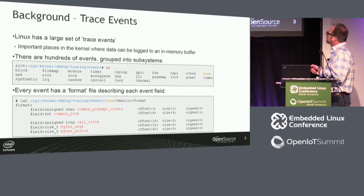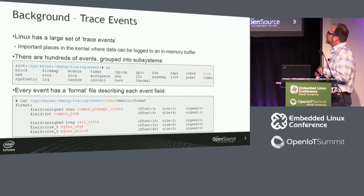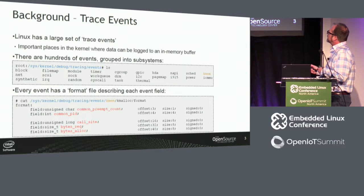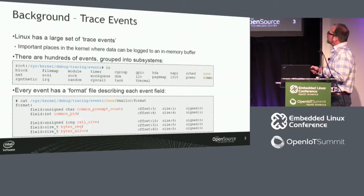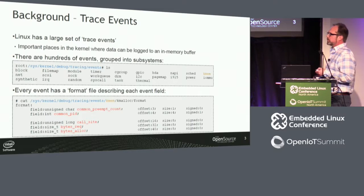Within each trace event subdirectory there are a set of files used to describe and control individual trace events. The most important file for this talk is the format file, which describes the event data that gets logged whenever you enable an event. This is an example — the kmalloc event within the kmem subsystem — and I've highlighted the individual fields, which is exactly what gets logged to the buffer.